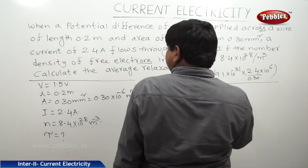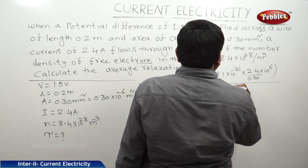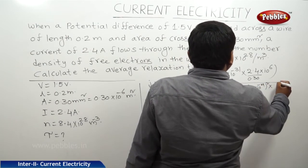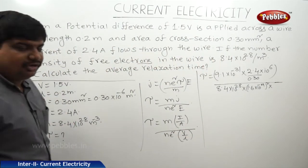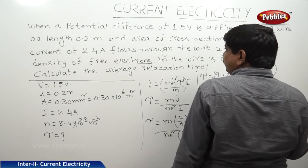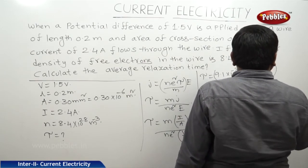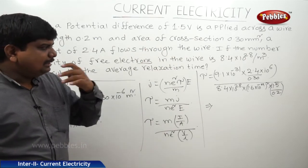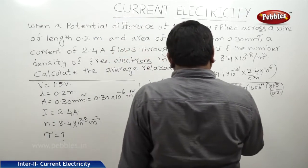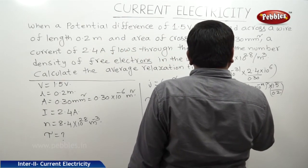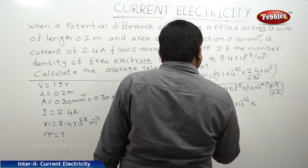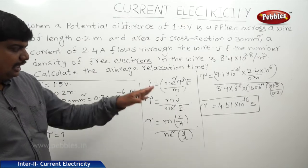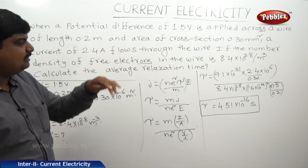The whole expression is divided by n·e². Number density n is 8.4 into 10 to the power of 28, e squared is 1.6 into 10 to the power of minus 19 whole squared, potential V is 1.5 volts, and length L is 0.2 meters. Substituting all values, we get tau equal to 4.51 into 10 to the power of minus 16 seconds. This is how we find the relaxation time for these types of problems.